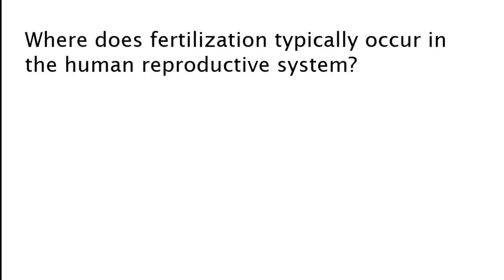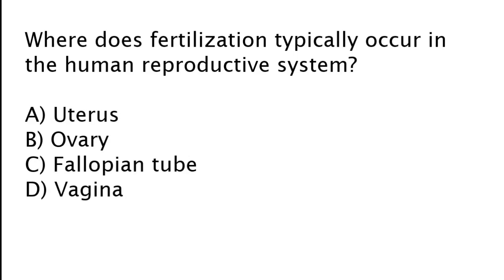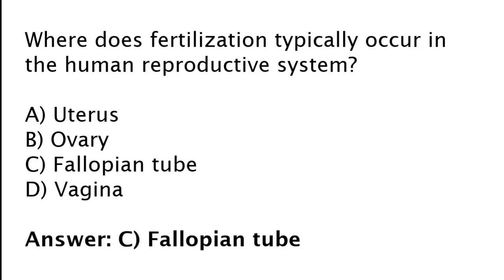Where does fertilization typically occur in the human reproductive system? Uterus, ovary, fallopian tube, or vagina? The correct answer is option C. Fertilization typically occurs in the fallopian tube of the human reproductive system.